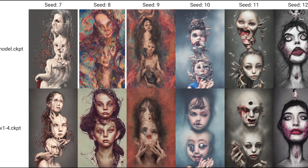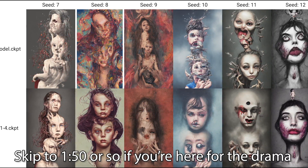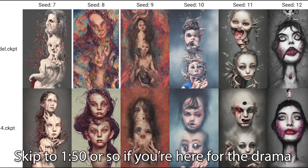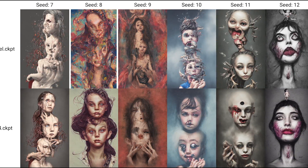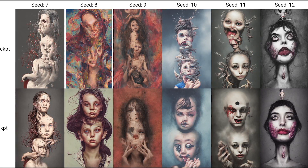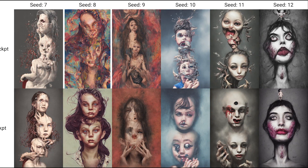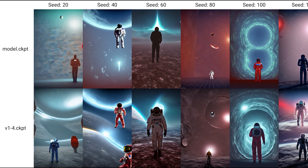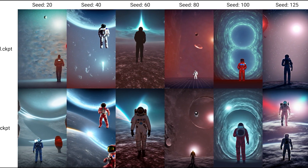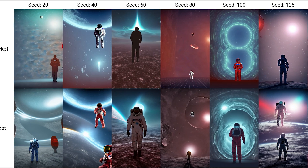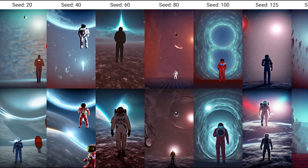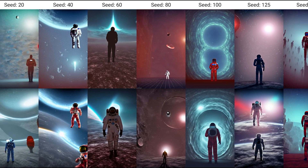What you're seeing labeled as model.checkpoint is the 1.5 model, and I've compared it here to the 1.4 with the same prompt, same seeds, and all that, so you can see what the difference is between the two. Sometimes it's awesome, other times maybe not so much. It definitely seems to help to have both. The difference between 1.4 and 1.5 is simply the amount of training steps — 1.5 should technically be the same thing but better, but there are some diminishing returns it looks like.